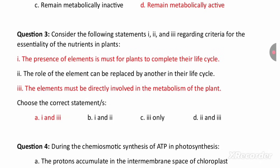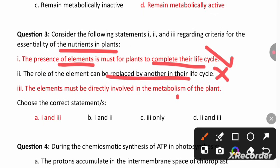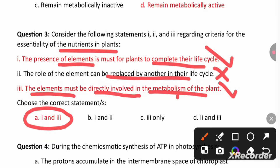Consider statements 1, 2, and 3 regarding the criteria for essentiality of nutrients in plants. Statement 1: the presence of an element is must for plants to complete their life cycle — this is correct. Statement 2: the role of one element can be replaced by another — this is incorrect, because for example magnesium in chlorophyll cannot be replaced by any other element. Statement 3: the element must be directly involved in the metabolism of the plant — this is also correct. So option A is the right answer.